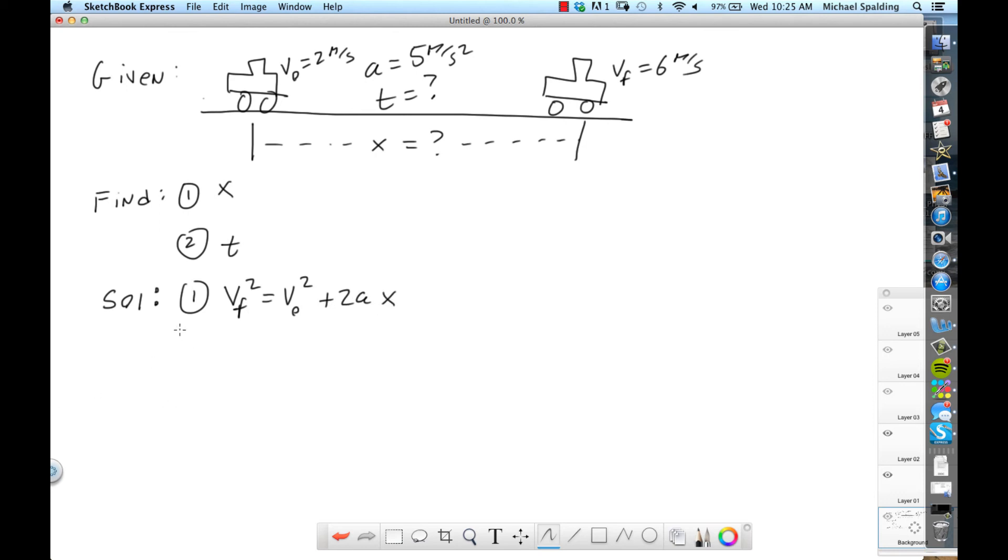All right. So which variable are we solving for? X. So don't plug the numbers in yet. Okay? We're solving for X. So do the algebra. You could do it in your head. You know, you don't have to show every step. VF squared minus V initial squared over 2A.